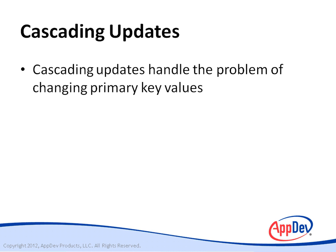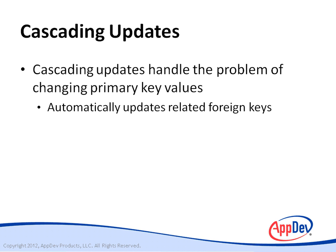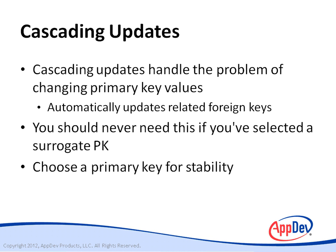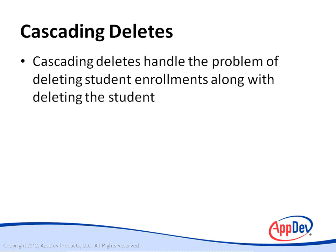Cascading updates handle the problem of changing primary key values by automatically updating related foreign keys in all related tables. You should never need to use this method if you use surrogate keys, but either way, you should always choose a primary key for its stability — one or more fields that will never change for that row. Cascading deletes also handle the problem of deleting related records in other tables so that the deletion doesn't violate any foreign key constraints.